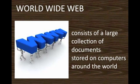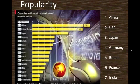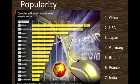Let us check the popularity of the internet. This bar graph represents countries with the most internet users. China tops the list, followed by the USA, Japan, Germany, Britain, France, and India. There are eight more countries also represented on the bar graph.